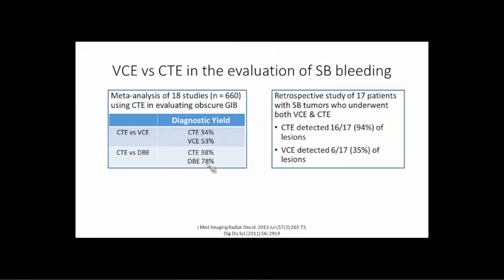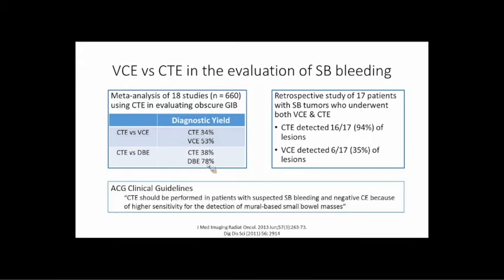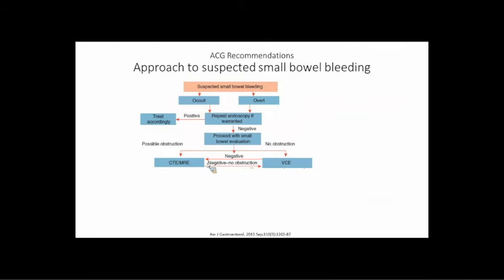However, CT is much better than capsule at finding masses. In a small retrospective study of 17 patients with known small bowel tumors, CT detected the tumor in 16 out of 17 patients while capsule only detected it in 6 out of 17. So if you're worried about a mass, cross-sectional imaging is probably a better study. The guidelines basically suggest that CT should be performed in patients with suspected small bowel bleeding and a negative capsule, because of the higher sensitivity for mural-based small bowel masses.